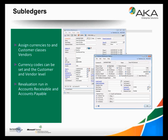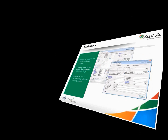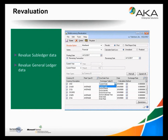The next thing I want to talk about is sub-ledgers. Inside the individual ledgers like accounts payable and accounts receivable, you can assign currencies to vendor classes and customer classes. Currency codes can be set at the customer level and the vendor level, and revaluation can be run in AP and AR. So you can revalue all of your customers and your vendors. At the end of each month, after printing statements, you may want to revalue them inside the sub-ledger so that the individual detail of each customer is revalued in addition to the balance sheet being revalued.